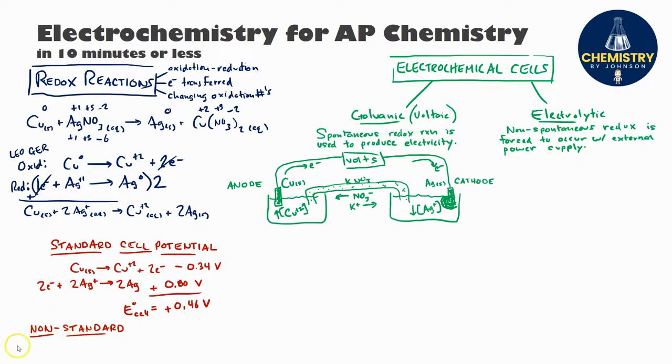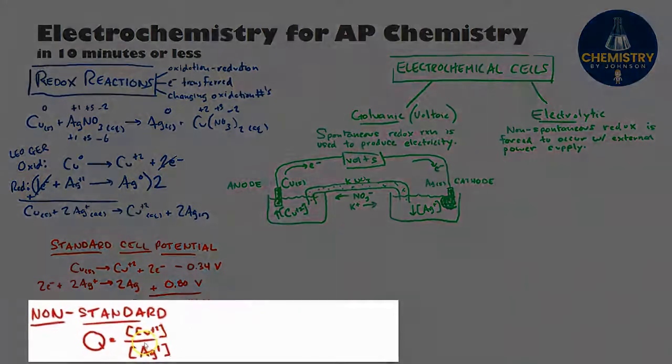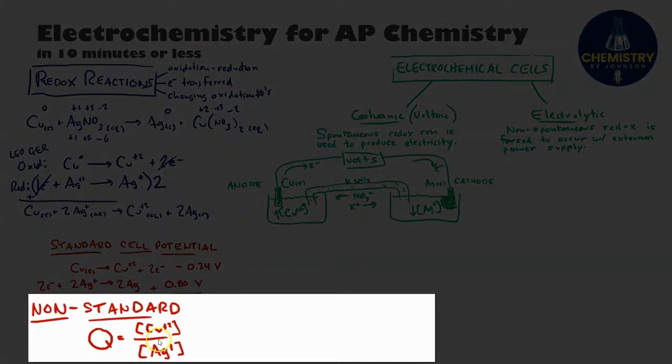You can also make some predictions about what this would be like under non-standard conditions. We can do this by solving for Q to see how close these non-standard conditions are to equilibrium. For example, if the copper concentration in my cell was 2, that means the Q value for the reaction is 2.